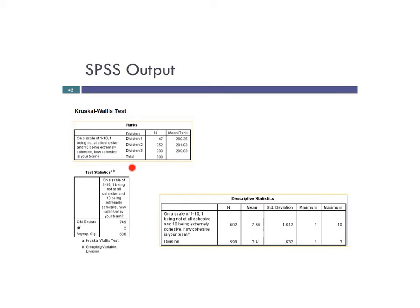First we look at the test statistic. We start off by looking at the chi-square, which is the actual test statistic here. Degrees of freedom follow, and then the asymptotic sig is our p-value. Since p is greater than 0.05, we have no significant mean rank difference. Unfortunately, the descriptive statistics table doesn't help here — it should be divided by division so you can see the mean and standard deviation for each division. Mean ranks don't really give us useful information when the scale is 1 to 10 but your mean ranks are 280, 291, 299.